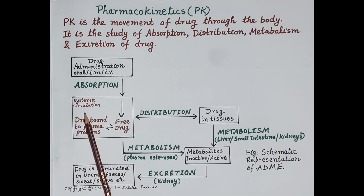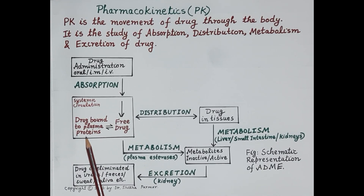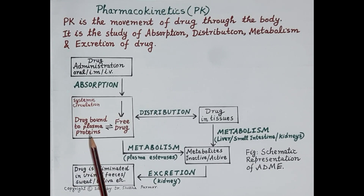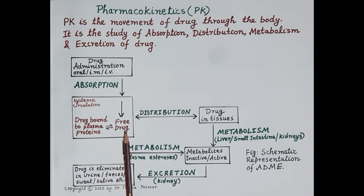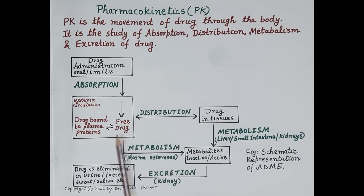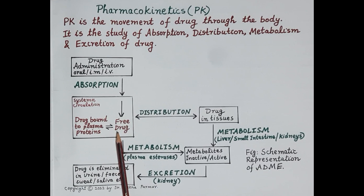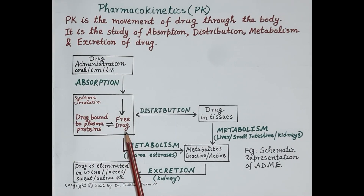Once a drug is absorbed and reaches the systemic circulation, plasma proteins such as albumin and glycoprotein are present in the blood. Most drugs bind reversibly to these plasma proteins, which act as a reservoir. The percentage of drug that binds to plasma protein varies from drug to drug. In systemic blood, the drug exists in two forms: free form and drug bound to plasma protein. As the free drug leaves the bloodstream and is distributed to body tissues, more of the free drug is released from these protein reservoirs, maintaining a constant plasma concentration.